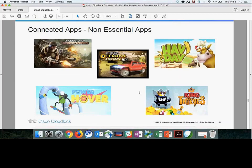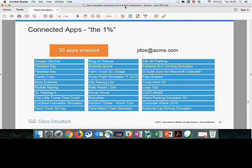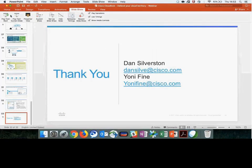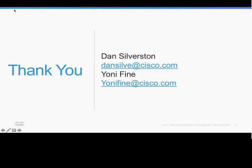That brings us to the end of the presentation. If you have questions, feel free to connect with us. On licensing: CloudLock pricing is very simple - it's per user, per application, per year. If you have 500 users and want to protect Google as an example, that's just 500 licenses for CloudLock. A very simple model.